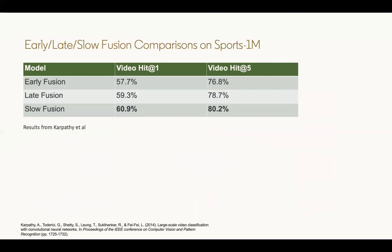In terms of results on the sports 1 million dataset, the authors showed that the slow fusion performed the best compared to early and late. These are the hit at 1 and hit at 5 metrics.